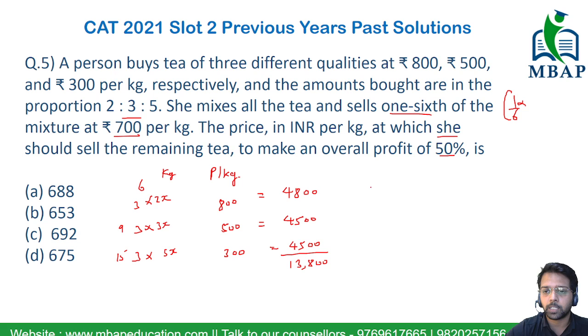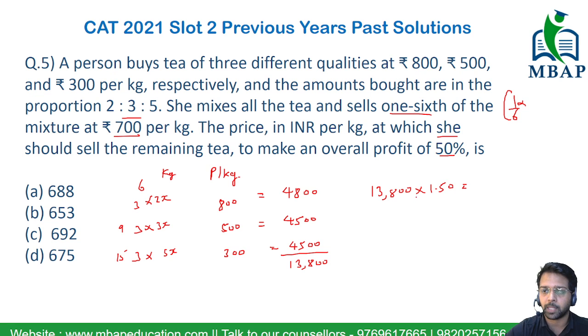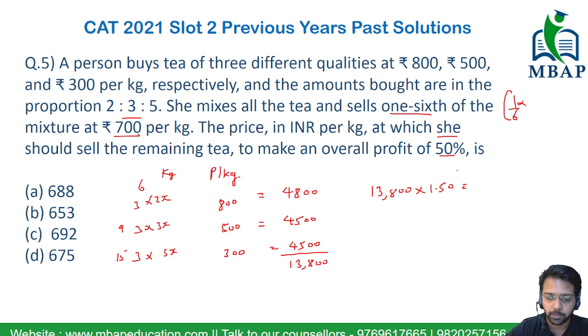So 13,800 is my cost price. We want to get a profit of 50% over this, so the overall selling price will be 1.5 × 13,800.